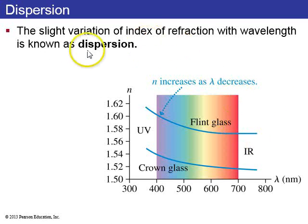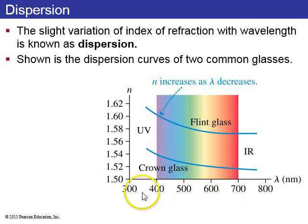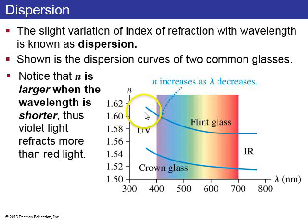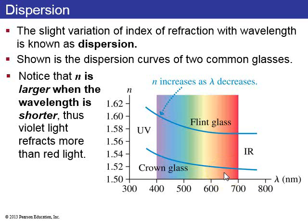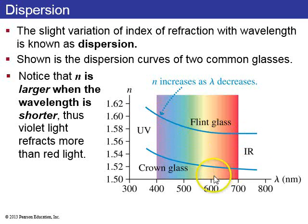Dispersion is the slight variation of the index of refraction of a material depending on wavelength. Here is a dispersion curve plotting wavelength versus index of refraction for flint glass and crown glass — two different kinds of glass. Flint glass has a larger index of refraction than crown glass, but for both, n is larger when the wavelength is shorter. So purple light travels slower in glass than red light.